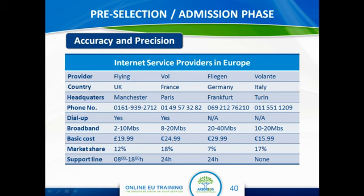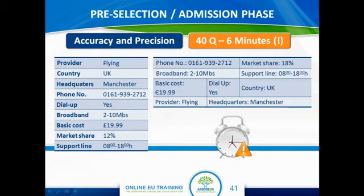For example, country headquarters, market share, opening hours for the support line, and some other aspects. In an accuracy and precision test, your task is to compare the information in the so-called source table — the table shown in the previous slide — on the left side of this slide, to another table and see whether the information is correctly reflected or reproduced in the table on the right. So in our case, you need to compare the information for the Internet service provider named Flying Broadband: support line, opening hours, market share, to the original information in the table on the left.